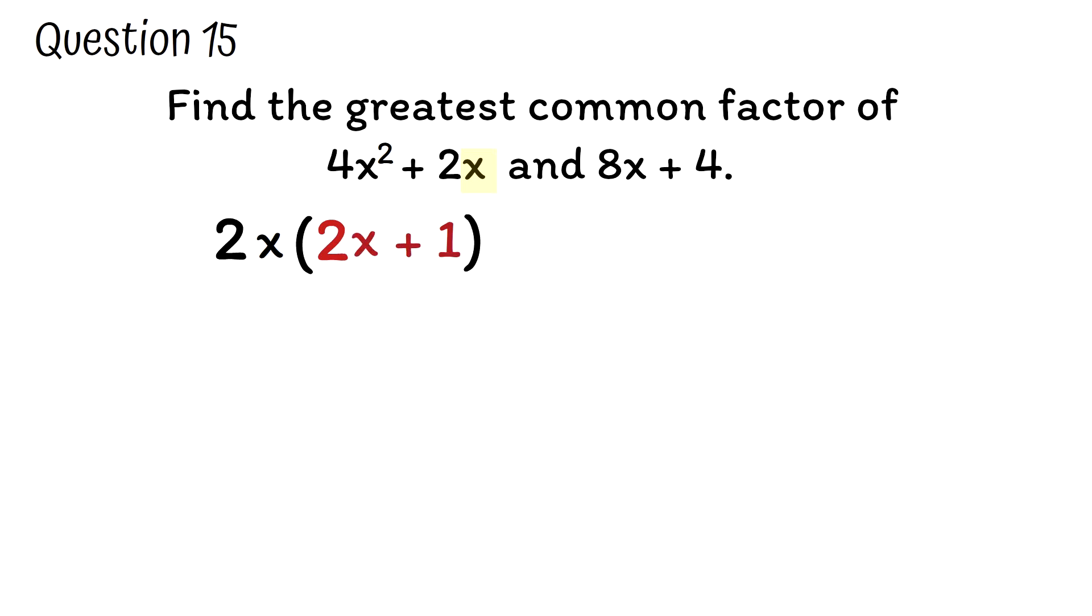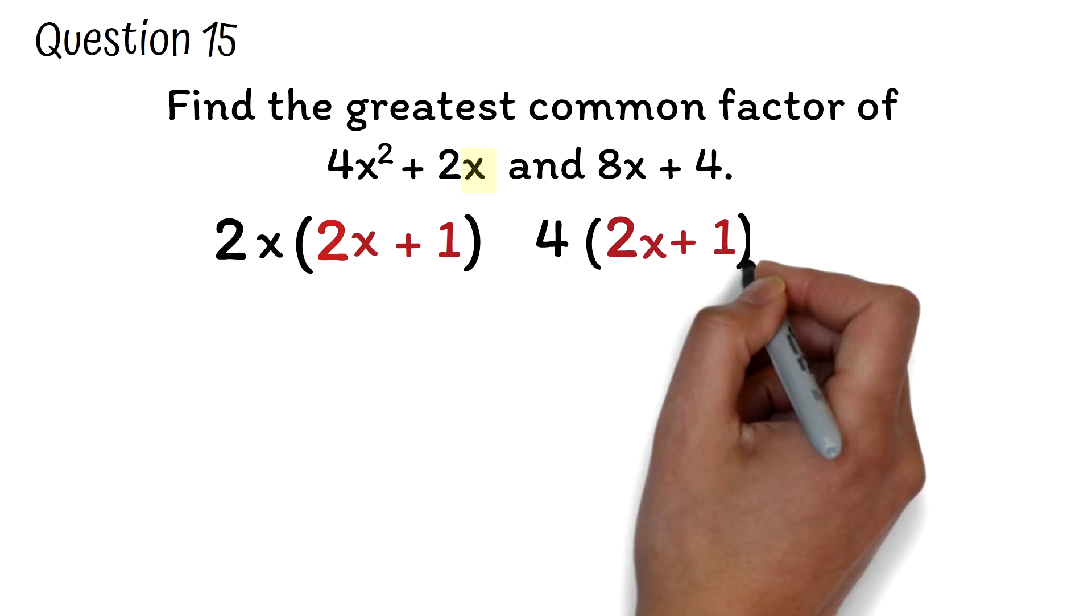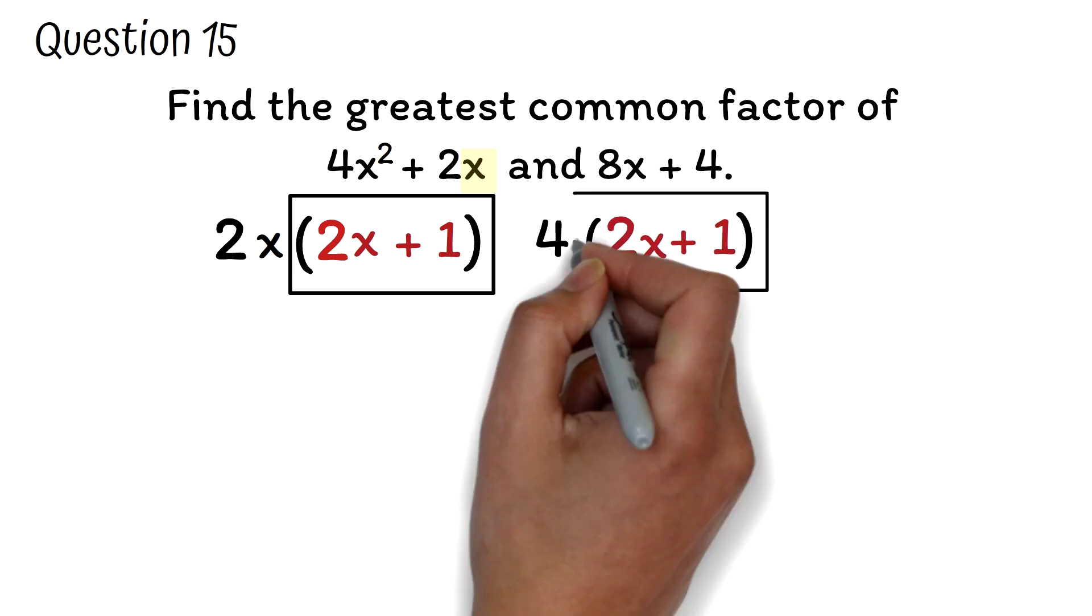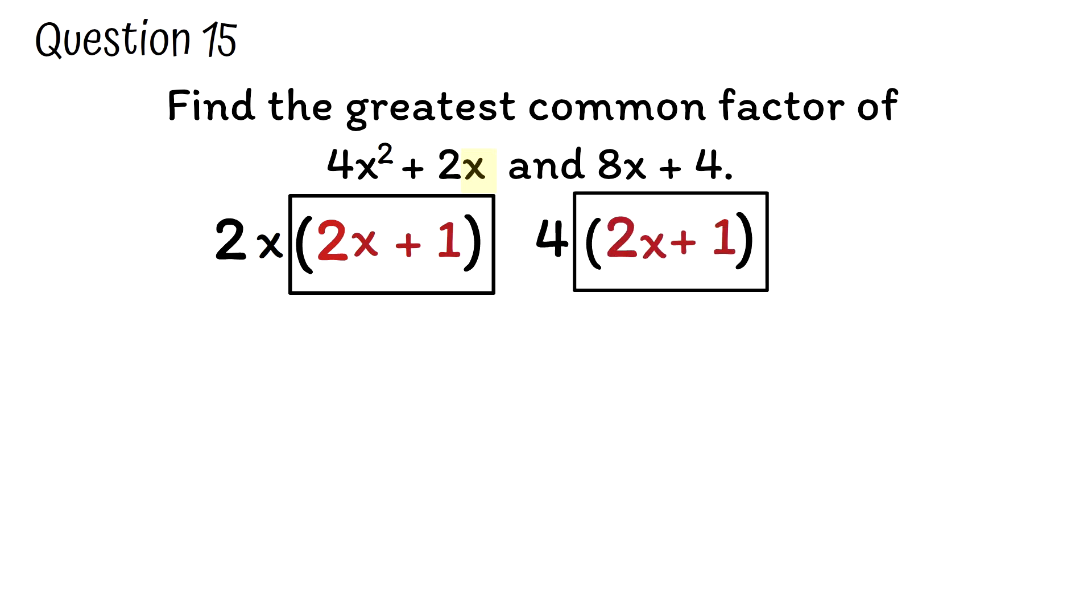We have a detailed video about factoring and factorization. Please use the link below to check it out for a clearer understanding. We do the same kind of factorization for the 8x plus 4. We can factor 4 out because 4 can divide both numbers without a remainder. 8 divided by 4 is 2 and 4 divided by 4 is 1. We cannot factor the x, so we leave it here. Finally, we can see that 2x plus 1 is common to both polynomials. That will be the greatest common factor. So the GCF is 2x plus 1.